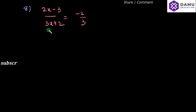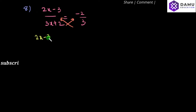So, in this 8th question, what they have given is: 2x minus 3 by 3x plus 2 equal to minus 2 by 3. What we have to do is simply do cross multiplication. So, if we do cross multiplication: 2x minus 3 into 3 equal to minus 2 into 3x plus 2.